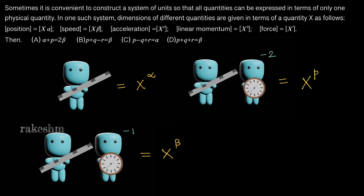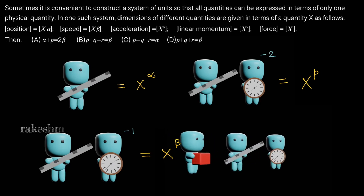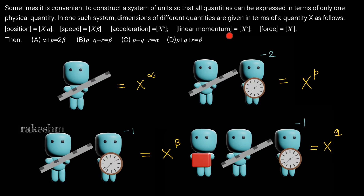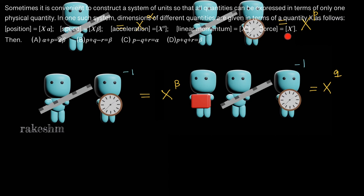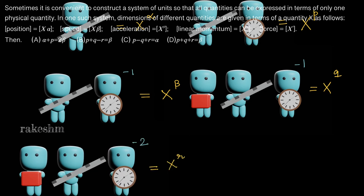Acceleration is given as x power p. Acceleration is meter per second squared or L T power minus two, given as x power p. Linear momentum is given as x power q. Linear momentum is mass into velocity, or kg meters per second — that is M L T power minus one — given as x power q. Force is given as x power r. Force is mass into acceleration, or kg meter per second squared, that is M L T power minus two, given as x power r.